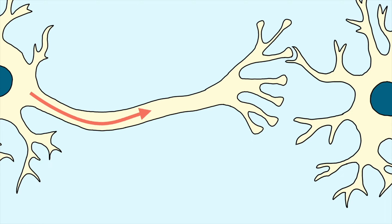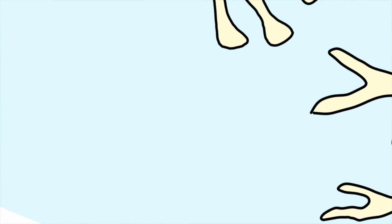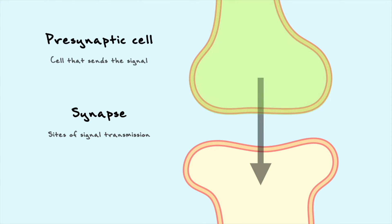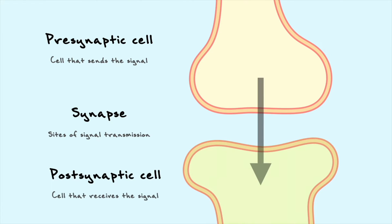Now that we understand how the signal travels through the neuron, we need to understand what happens when that signal reaches the axon terminal. Neurons communicate at synapses, which are the sites of signal transmission. The cell sending the signal is the presynaptic cell, the cell receiving it is the postsynaptic cell, and the space between them is called the synaptic cleft.